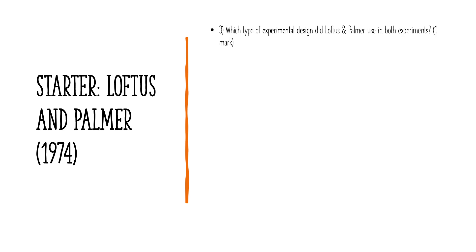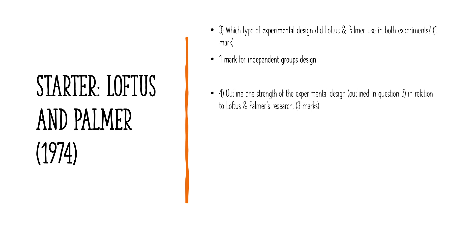Question three: which type of experimental design did Loftus and Palmer use in both experiments — repeated, independent, or matched pairs? One mark for identifying that it was independent group design, because each condition was tested by a new group of participants. One strength of using an independent group design is that it reduces order effects — you might have a different strength, so give yourself a mark if your response is credit-worthy.